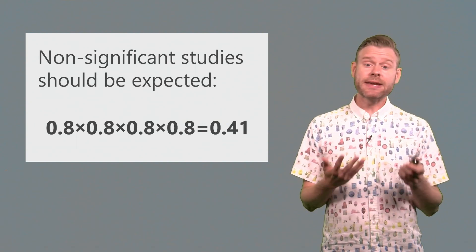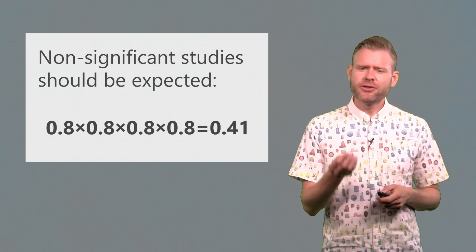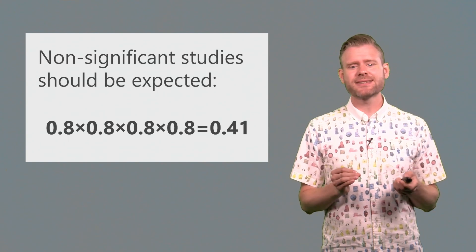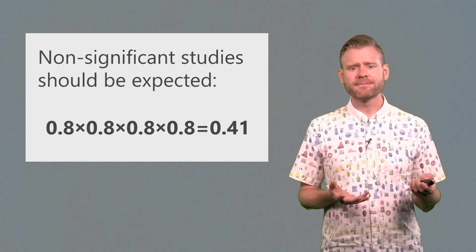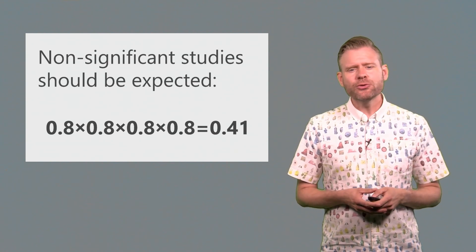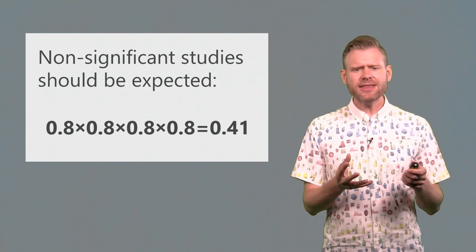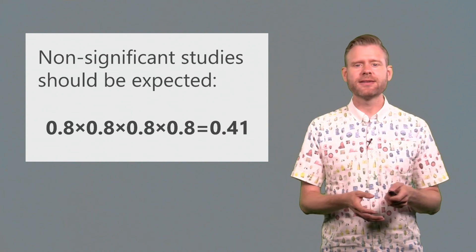Now let's say that you're like me, and you're actually always right. In every study that you do, the alternative hypothesis is correct, as you predicted. Even in these cases, you should expect non-significant results in lines of research. Let's imagine that you do four studies in a row, and for each of these studies, you design them in a way that you exactly have 80% power in each study that you perform.